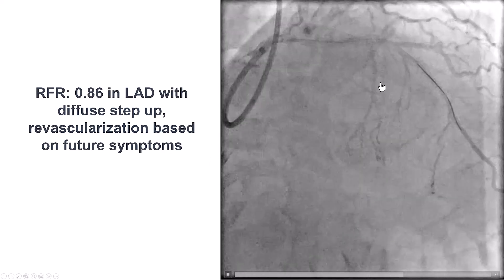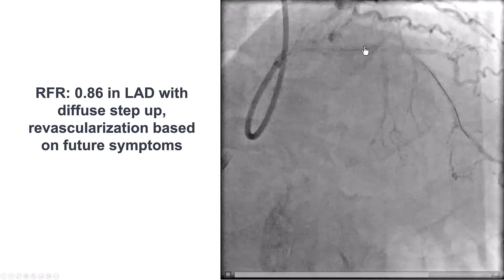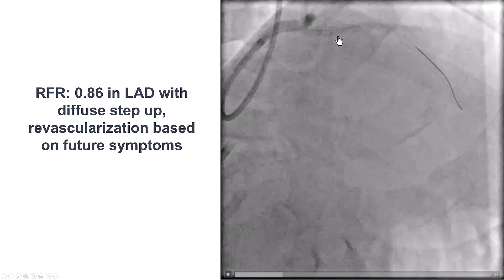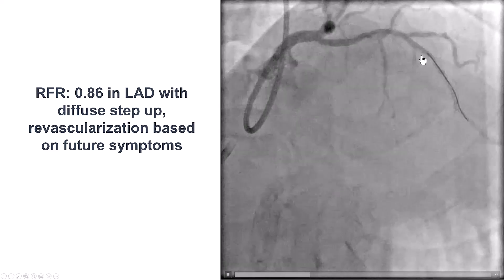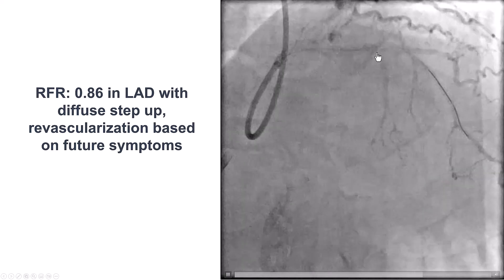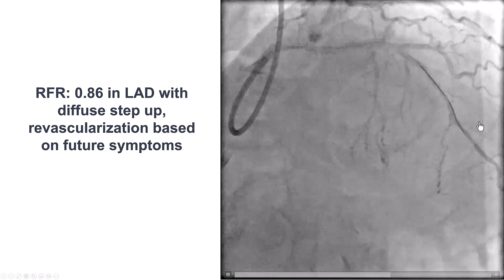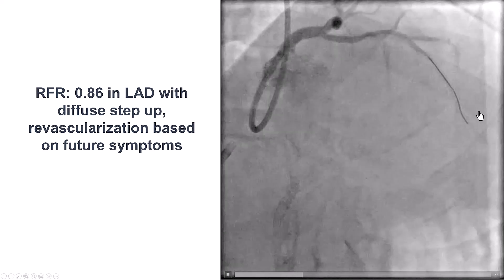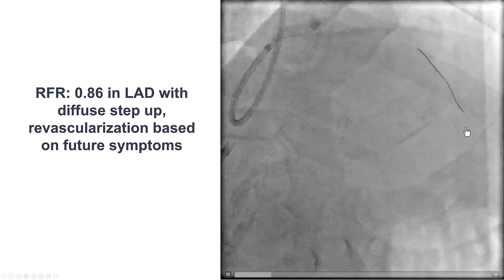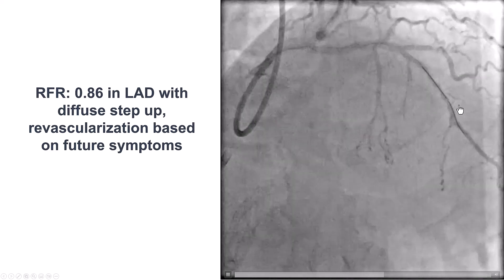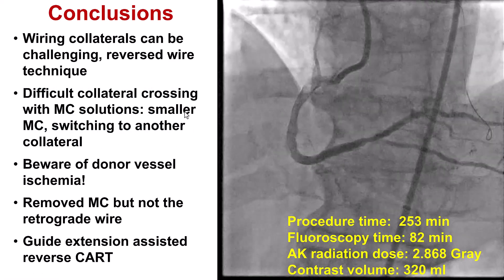Given the difficulties earlier in the case with ST segment changes, we decided to reassess the LAD. We performed a pressure wire measurement and the RFR was 0.86, indicating significant ischemia and a significant lesion in the LAD. However, it was not focal — it was diffuse disease with a gradual step-up. Therefore, we decided not to stent, because otherwise we would have to stent all the way from the mid to the proximal LAD.